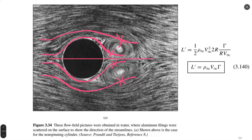According to Laplace's equation, the flow pattern should be perfectly symmetric, and in the front part of the cylinder, real flow does follow the Laplace solution. However, in the back part of the cylinder, the flow diverges significantly from the Laplace solution, so we cannot rely on it there.